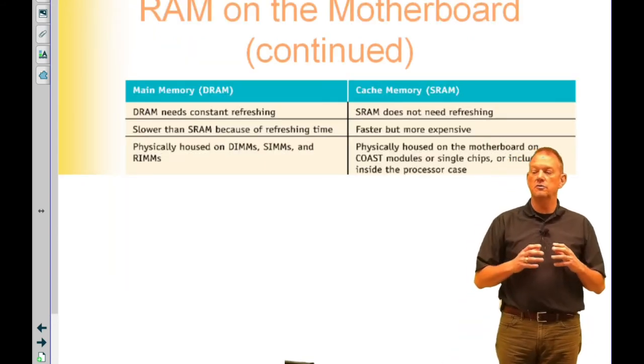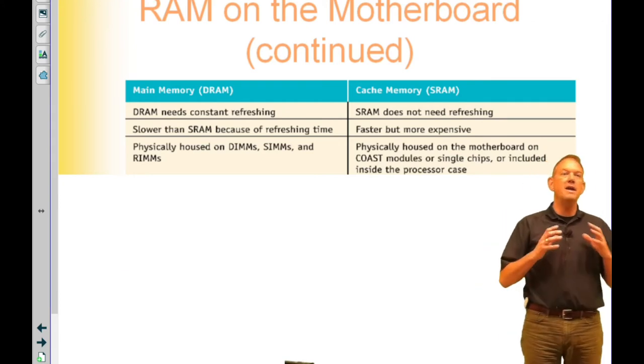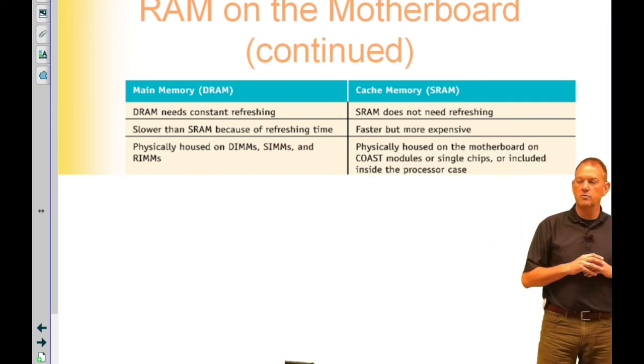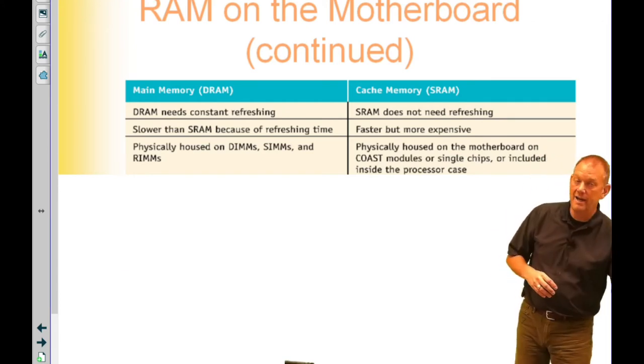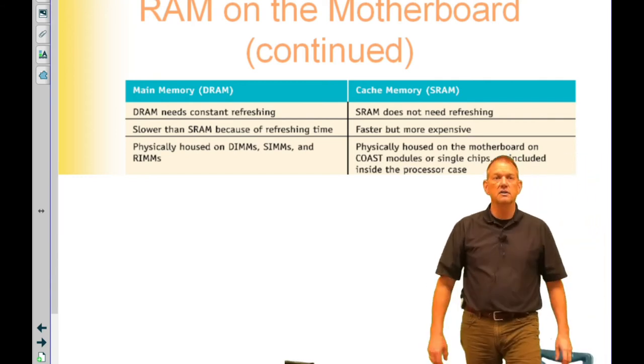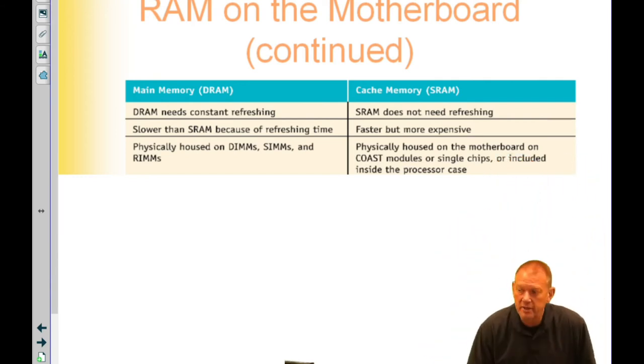Now the difference between the two is really this. That main memory or system RAM is dynamic. It's constantly being refreshed and it's a little bit slower than static RAM.